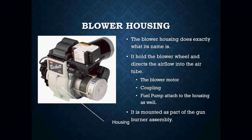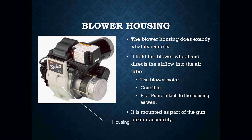Your blower housing does exactly what the name implies — it holds the blower wheel and directs the airflow into the air tube. Your blower motor, coupling, and fuel pump are attached to the housing as well. Your adjustable air inlet collar is used to regulate the air to the blower. This is the collar we use to adjust the air being supplied to our flame so that we can have proper combustion. This is the only air adjustment for combustion and is important for making correct combustion adjustments.